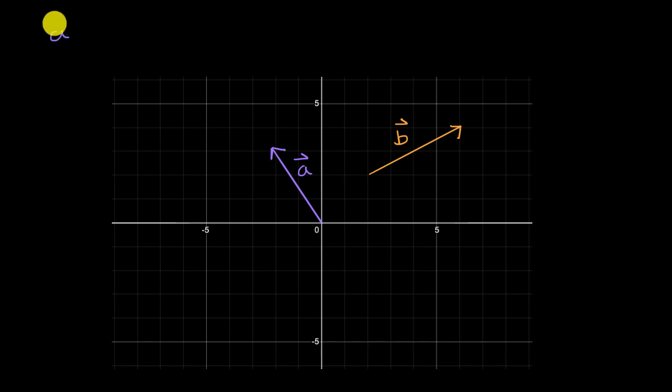So let's say we want to start with vector a, and from that, we want to subtract vector b, and we have vectors a and b depicted here. What do you think this is going to be? What do you think is going to be the resulting vector? Pause this video and think about that.